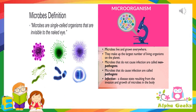Now let's see what are microbes. Microbes are single cell organisms that are invisible to the naked eye. They can only be seen with the help of a microscope. Microbes live and grow everywhere as they only need warmth, moisture, food and air for growth.